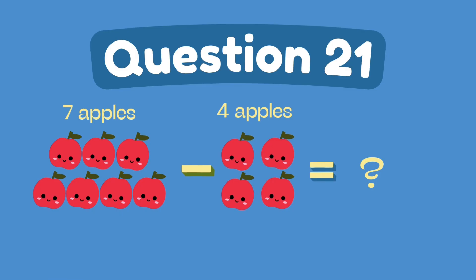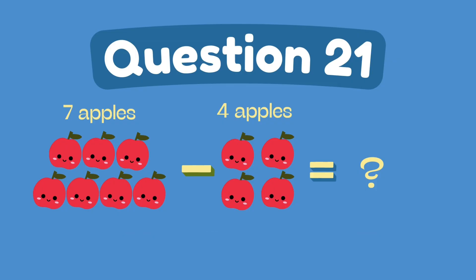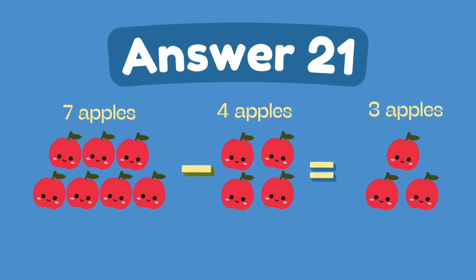What is seven minus one? What is seven minus four? The answer is four.